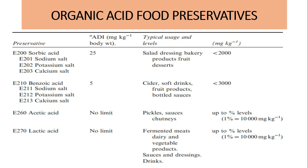Sorbic acid is coded E200. Its salts include sodium sorbate (E201), potassium sorbate (E202), and calcium sorbate (E203). Typical usage levels for sorbic acid and its salts are less than 200 mg per kg, used in products such as salad dressings, bakery products, and fruit desserts.